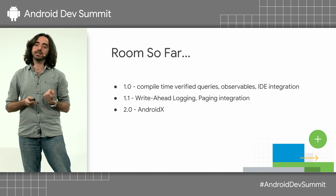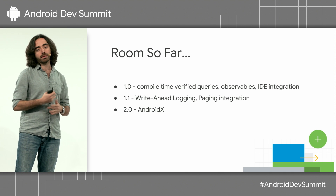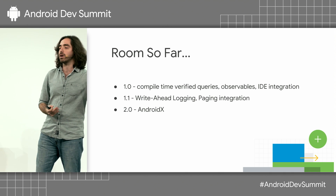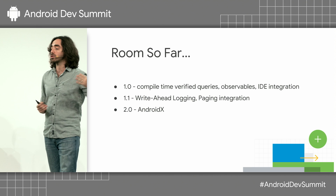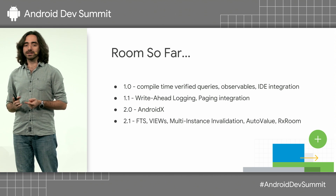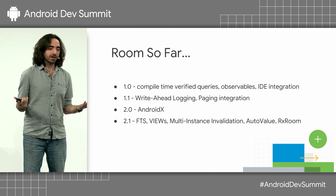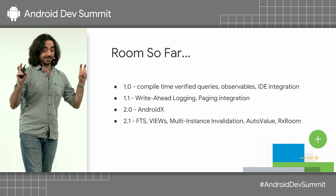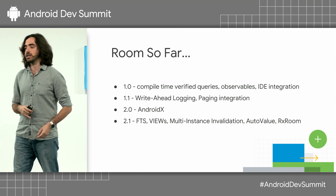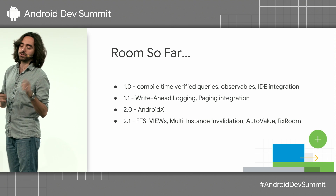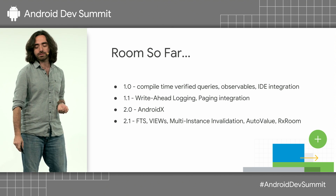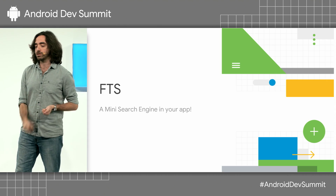The 2.0 release was just our conversion from Android Support to AndroidX, and we kept it the same as 1.1 so that you can have an easy migration. And 2.1 is what we're going to talk about today — it's actually kind of the real 2.0, it's a very large release. We have full-text search, views, multi-instance validation, auto-value, and more Rx stuff.